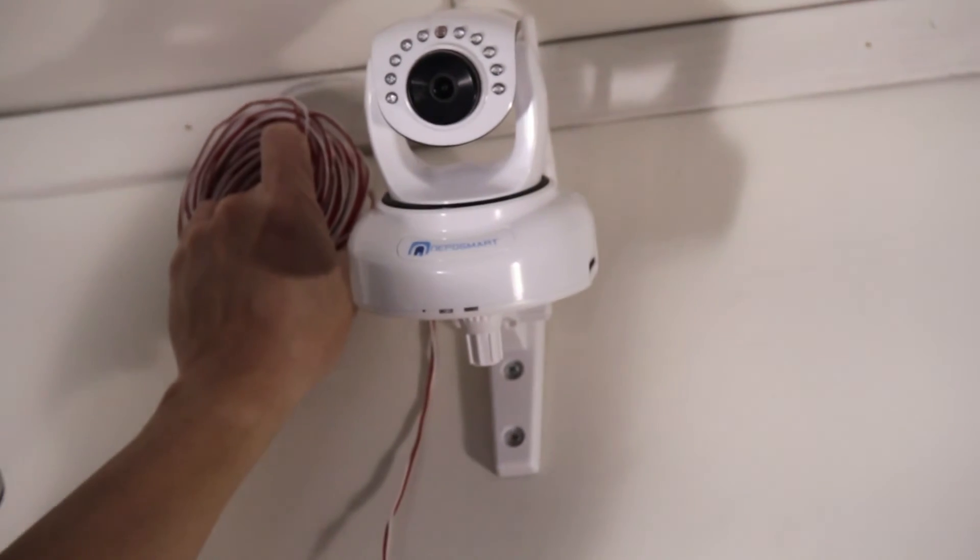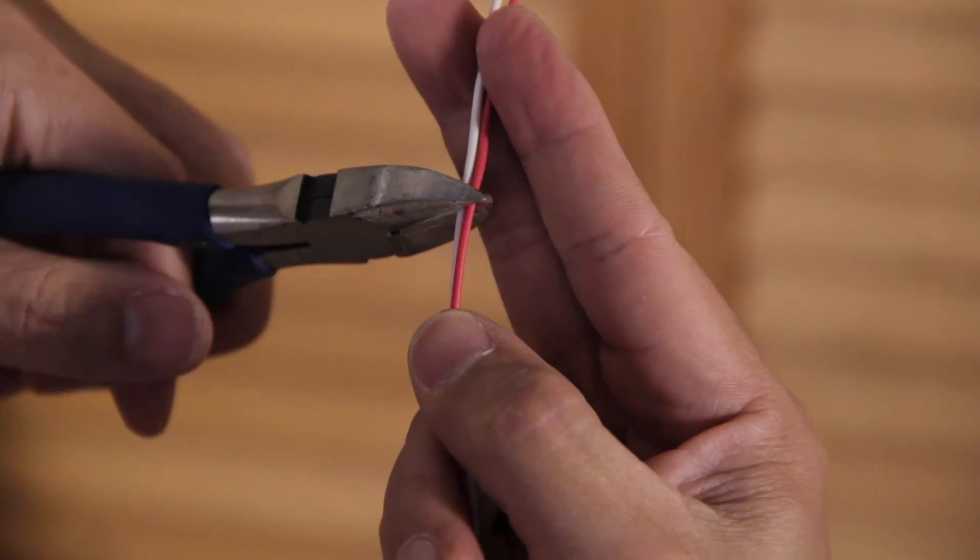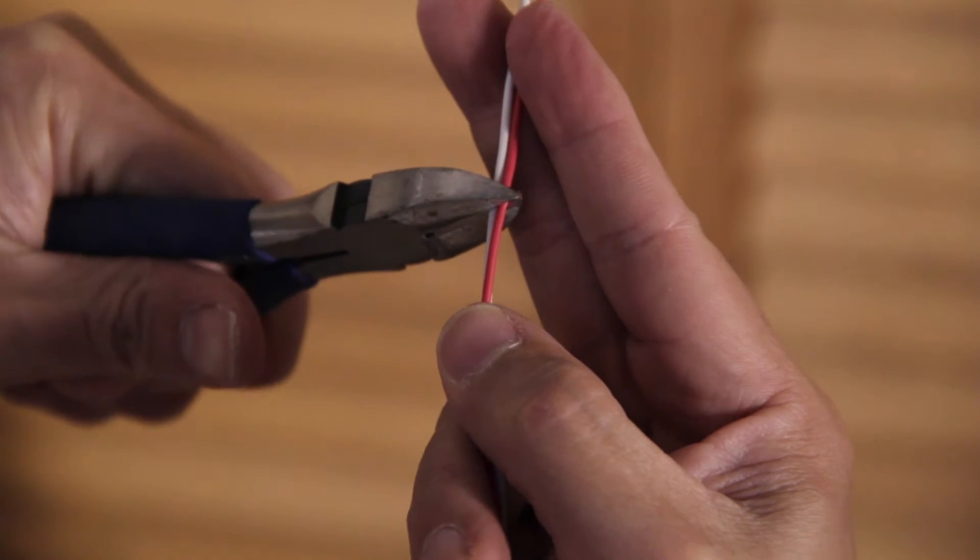The other end of the bell wire will be attached to your NepoSmart, so you need to trace the amount of wire you need, as depicted. Once you get your measurement, cut the wire to length.